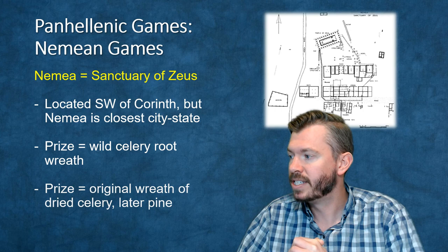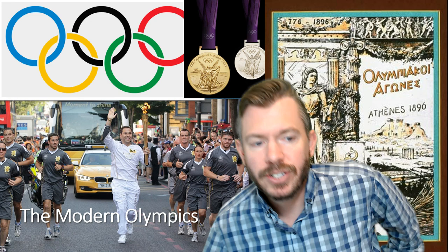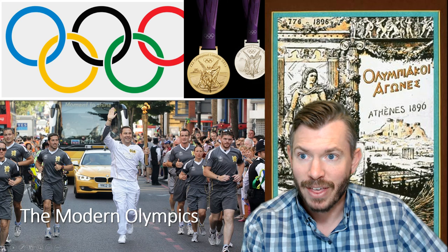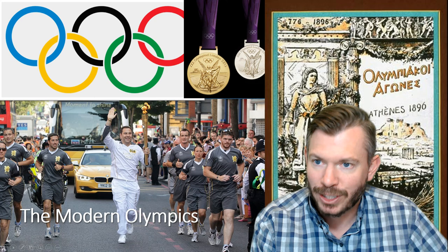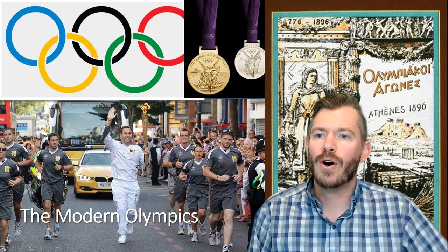We finished by talking about some of the major differences — all these things are modern constructions. The idea that the games travel around the world; the restart actually took place in Athens, not Olympia. The rings, the medals, the torch procession — that's all modern stuff.